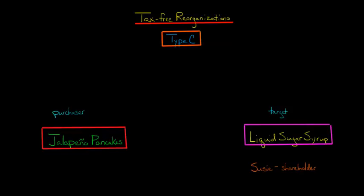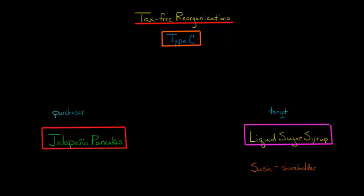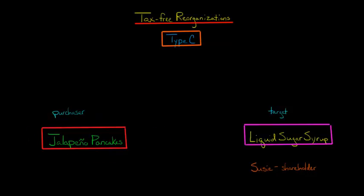In this video, we're going to talk about Type-C tax-free reorganizations. In a Type-C tax-free reorganization, you basically have the purchasing corporation — in this case, let's say it's Jalapeno Pancakes, a restaurant chain. They are going to transfer voting stock and possibly some boot.